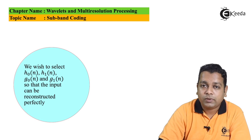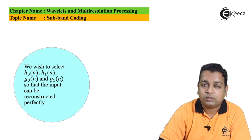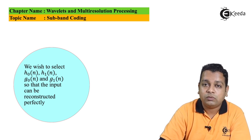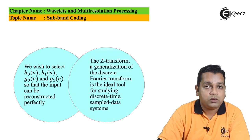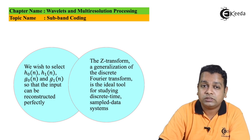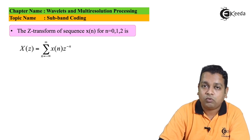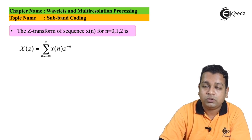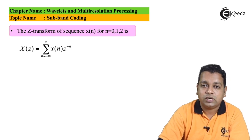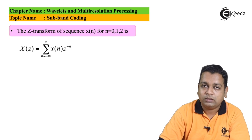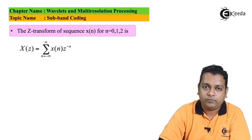We wish to select h₀(n), h₁(n), g₀(n), and g₁(n) — the transfer functions in the spatial domain for all filters on both the analysis and synthesis sides — so that the input can be reconstructed perfectly. We make use of the Z-transform, which is a generalization of the discrete Fourier transform and an ideal tool for studying discrete-time sampled-data systems. The Z-transform of input sequence x(n) is X(Z) = Σ x(n) · Z^(−n), summed from n = −∞ to ∞.